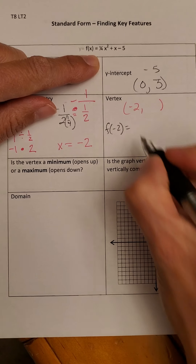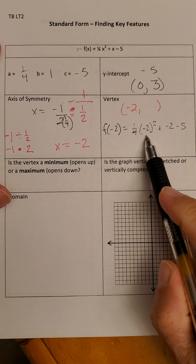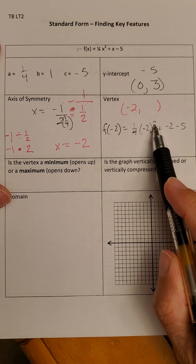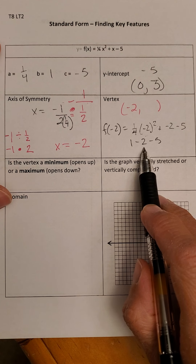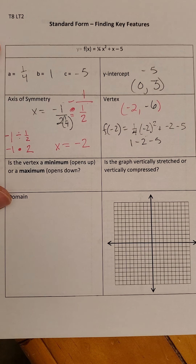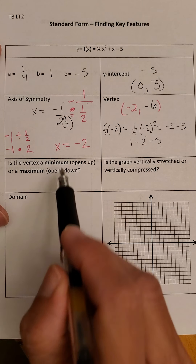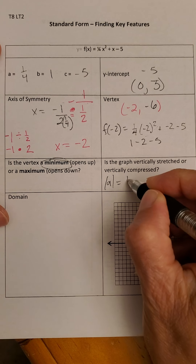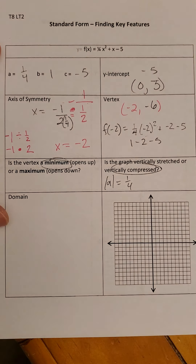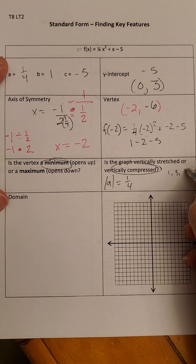Now I find F of negative 2 by plugging back into the original equation: 1/4 times negative 2 squared, plus negative 2, minus 5. Always square first — negative 2 squared is 4, and 4 times 1/4 is 1. So I have 1 minus 2 minus 5: 1 minus 2 is negative 1, minus 5 is negative 6. So my Y-coordinate is negative 6, and my vertex is (-2, -6). This parabola opens up because 1/4 is positive, so it has a minimum. The absolute value of A is 1/4 — between 0 and 1 — so it's vertically compressed and will look wider. The pattern will be 1/4, 3/4, 5/4, etc.